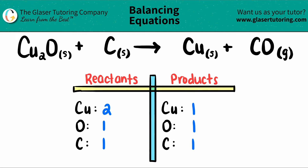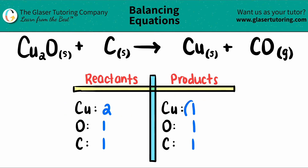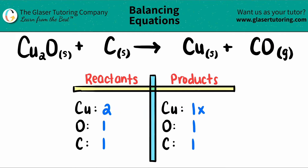Let's balance. It looks like the only thing we need to balance is the copper. We always turn the lower number into the higher number by multiplication. So one times what will get you two? One times two. And the number that you state is the coefficient of the element that you're trying to balance.